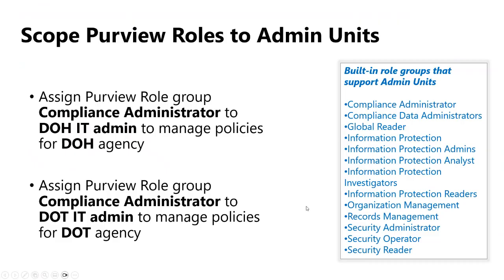Similarly, the Contoso admin will create another admin unit for DOT, and all users with department attributes set to DOT will be added to that admin unit. So we have finished creating the two administrative units. Next, the Contoso admin will assign the agency admins to the built-in or custom Purview role groups and then scope them to specific admin units. The Contoso admin adds the DOH admin and DOT admin to the built-in compliance administrator Purview role group, because these agency admins should be able to manage information protection, DLP audit, and data lifecycle management for their agencies.